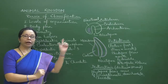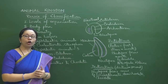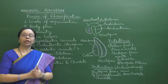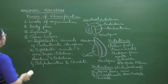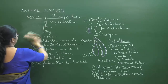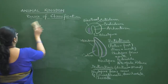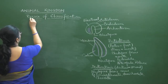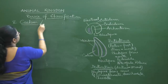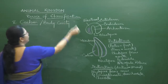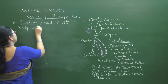Eucoelomate animals from Annelida upward are then categorized into two groups: Protostomia and Deuterostomia. Nematodes are not counted in Protostomia because they are pseudocoelomates. With that clarified, we move on to coelom — the next concept in the basis of classification.